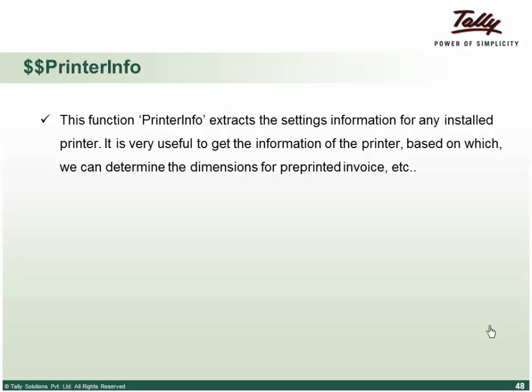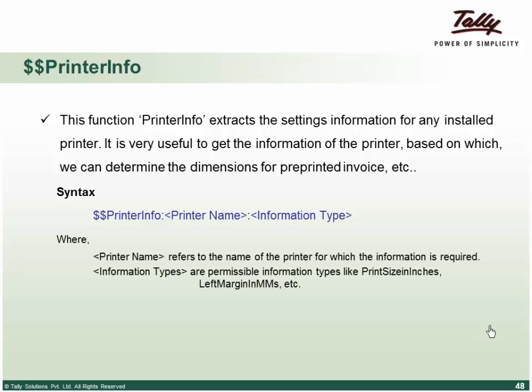The printer info function helps extract settings information of the installed printer. It is useful to get printer information based on which we can determine dimensions and pre-printed invoice settings. A company may have multiple printers — printer A always goes for pre-printed, printer B for check printing, printer C for plain paper. Printer info helps get required dimensions. Syntax: printer info, printer name, and the information type needed. Permissible information types include print size in inches and left margins — please refer to the PDF file for the full detailed list.